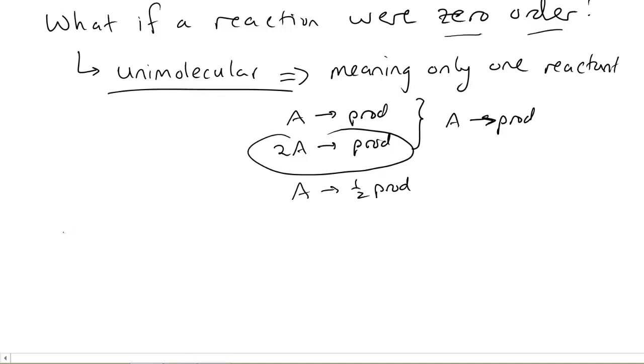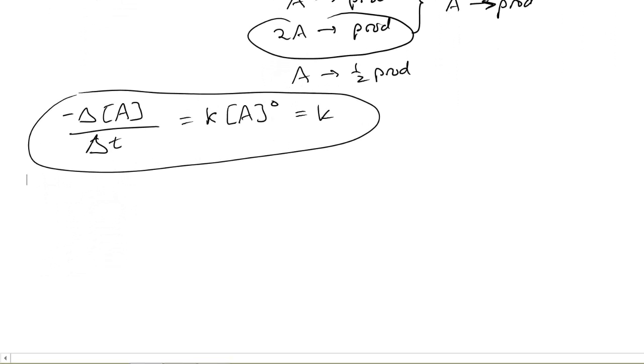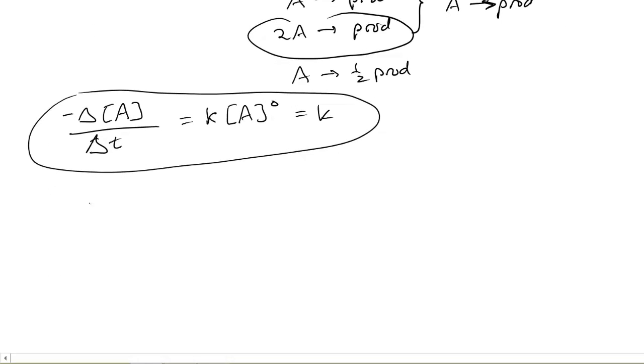And if you do that, then our rate becomes minus the change in the concentration of our A divided by the change in time, K times A to the what power? Zero. So it becomes equal to K. And so what this tells us is that the rate itself is constant, because it's just equal to the rate constant. And then if we apply that mathematics to it, this thing called integration, we find that the concentration of A minus the concentration of my initial amount is equal to minus K times T.